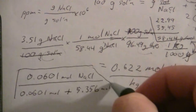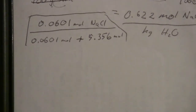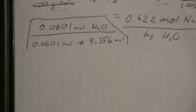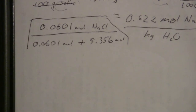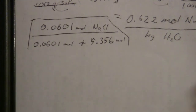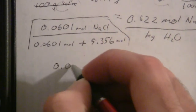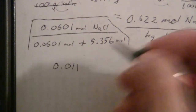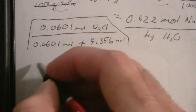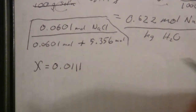Here is the mole fraction. We add those and divide: 0.0601 divided by that total. We get 0.0111099, so I'm going to say 0.0111 to keep it at three significant figures. That is the mole fraction of sodium chloride.